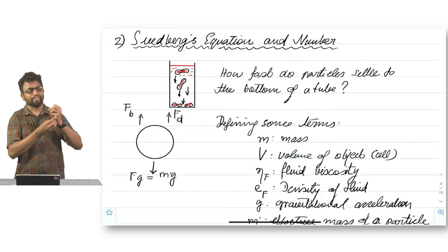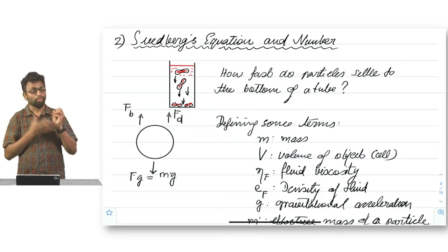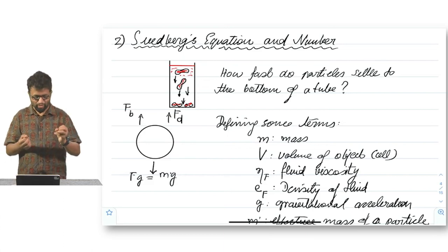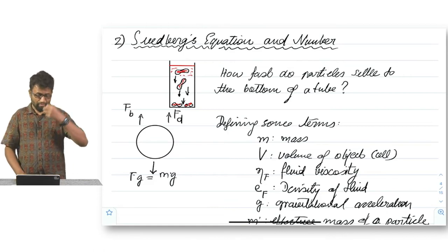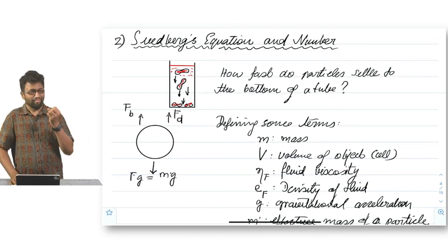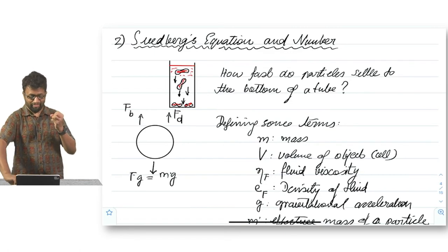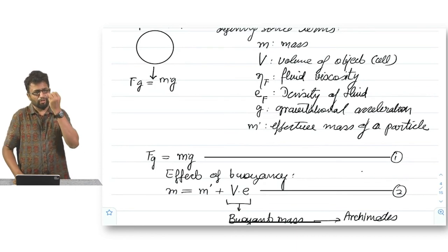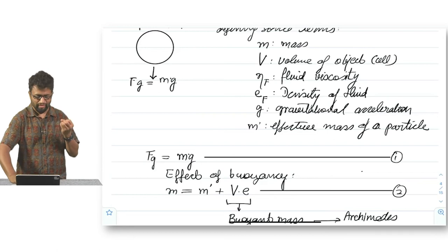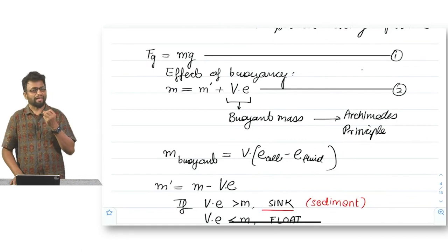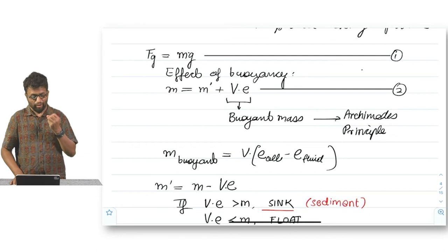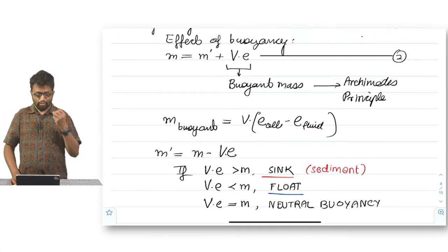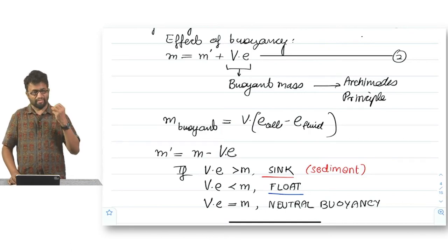This is a biophysics class, so we talk about symbols. M is your mass - the object's mass that defines the product of the volume and density. There is a distinction between mass and weight. Weight is mass into gravitational acceleration, mg, in Newtons. Then there is volume of the object or cell. Eta f is the fluid viscosity. Rho f is the density of the fluid. G is the gravitational acceleration. M prime is the effective mass of the particle.